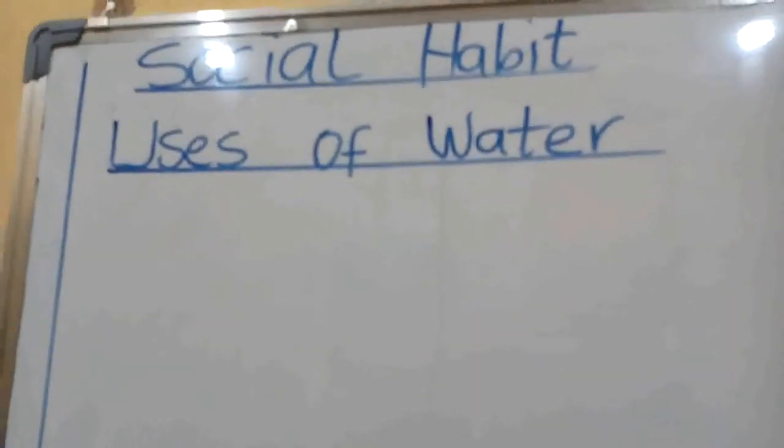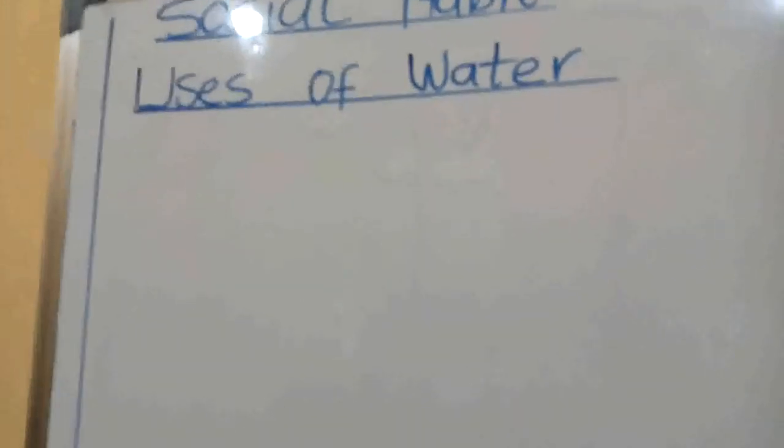Remember in our previous class, we took the definition of water. So now what did we say water is? Water is a colorless, odorless, tasteless, transparent liquid used by man, animals and plants.